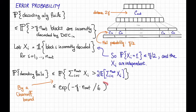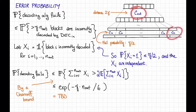Now that we've talked about what our decoding algorithm is and analyzed its error probability, we should say what the codes C_in and C_out are actually going to be. For the inner code, we'll basically do an exhaustive search to find a good one. For the outer code, we'll use something Reed-Solomon-esque.